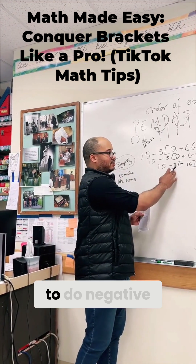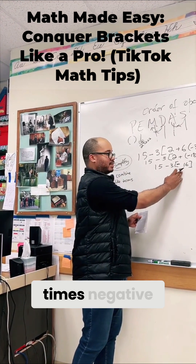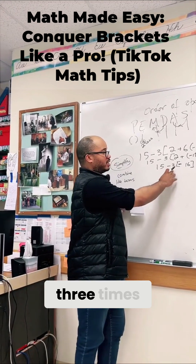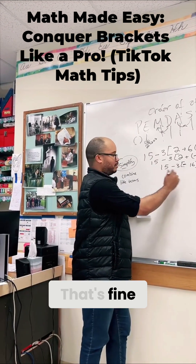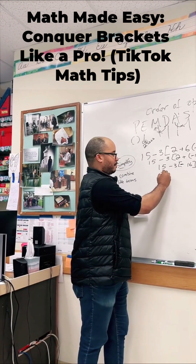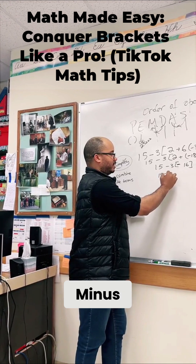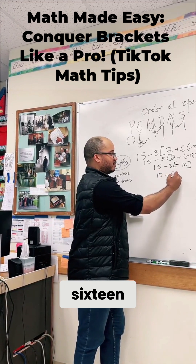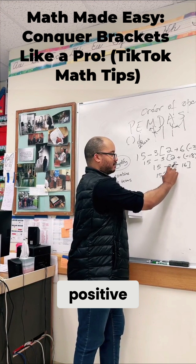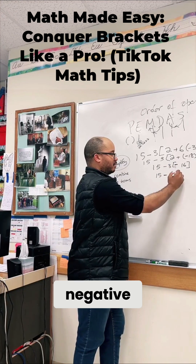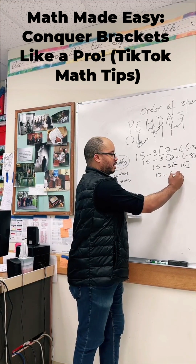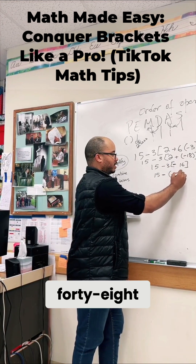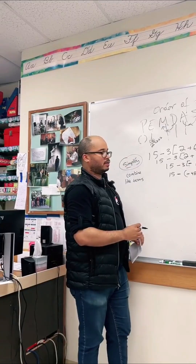So now I have to do negative 3 times negative 16. Some people would do 3 times negative 16 — that's fine too. I'll do that. What's 3 times negative 16? Well, 3 times positive 3 times negative 8 is 48.